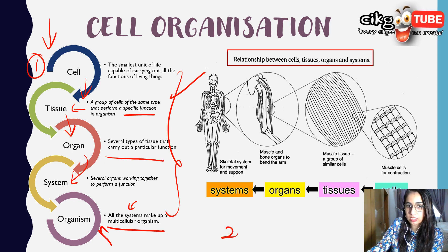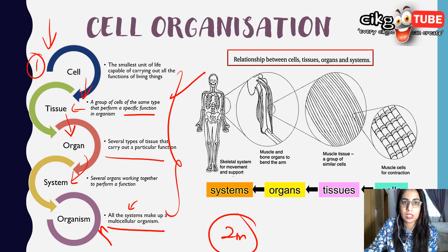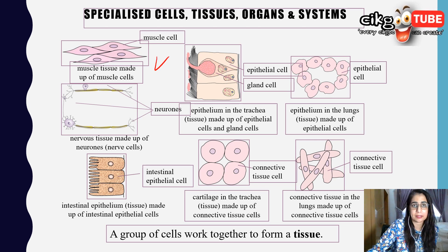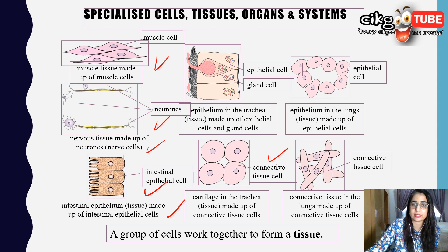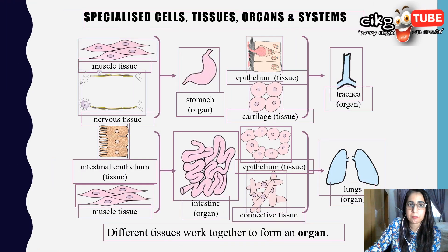These are the definitions you have to remember. For two-mark questions, they may ask: what is a cell, tissue, organ, system, or organism — so you must know these definitions. For examples: muscle cells form muscle tissue, neurons form nerve tissue, epithelial cells form epithelial tissue, and red blood cells are part of connective tissue.